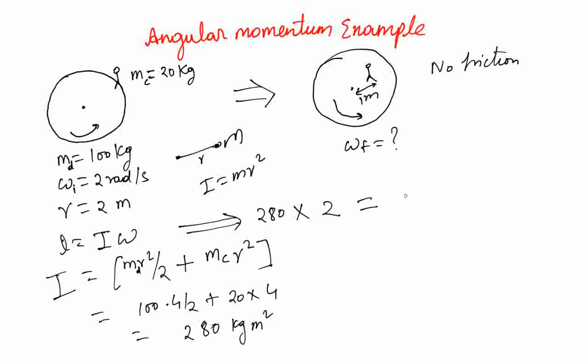The final angular momentum will be I_f because you see moment of inertia has changed as the child has moved inside. The geometry of the system has changed and that's why moment of inertia has also changed, multiplied by ω_f.